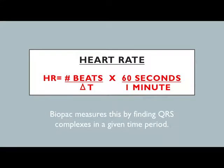Heart rate: keep in mind heart rate is number of beats over change in time. Change in time is in seconds, so we make that into minutes by multiplying by 60 over 1. Commit that equation to memory — this is the equation for BPM. Whether you're talking about beats per minute or breaths per minute, it's the number over the change in time times 60 over 1. BPM for breaths and beats: same equation.